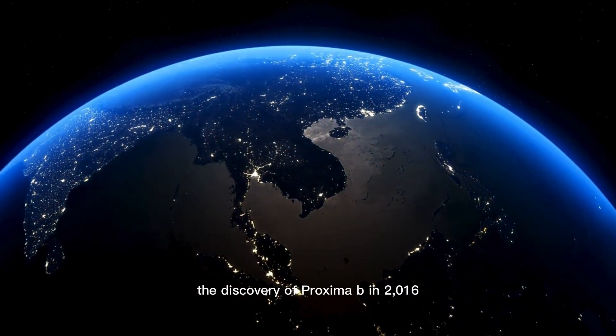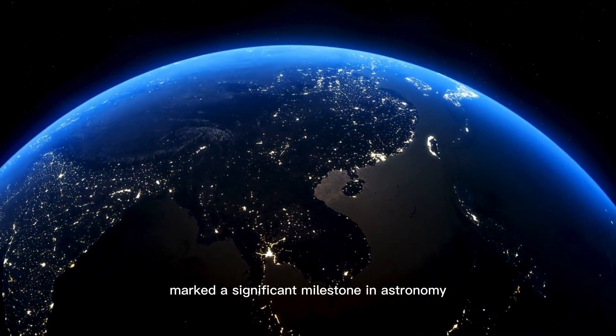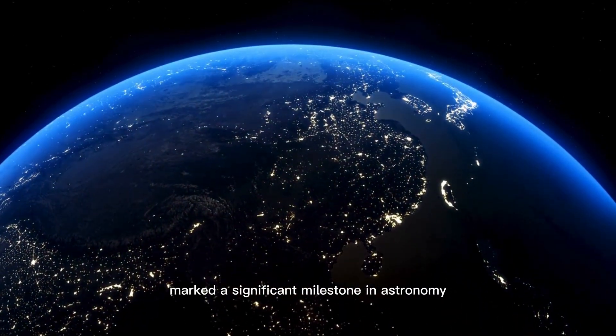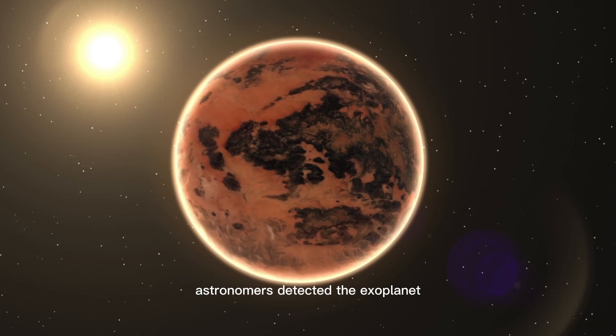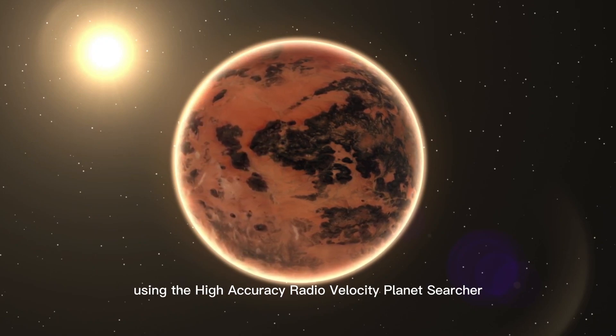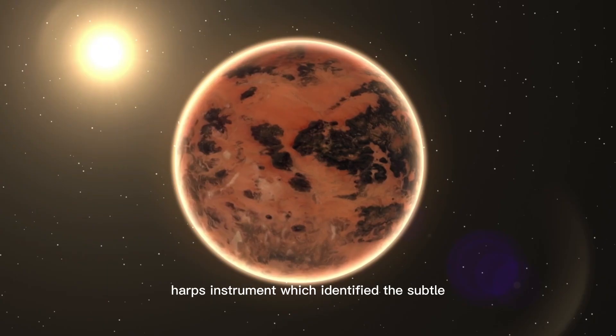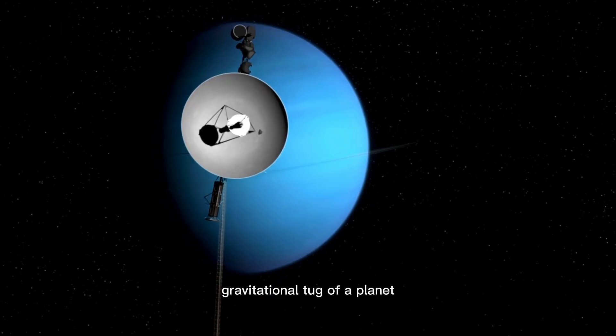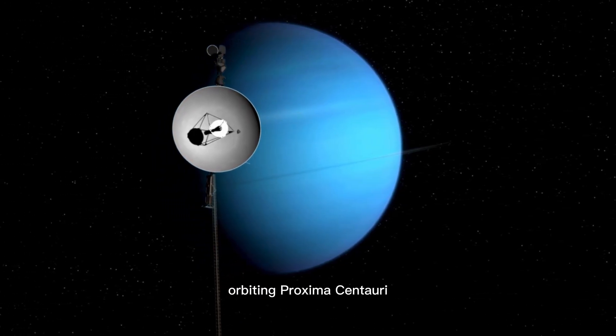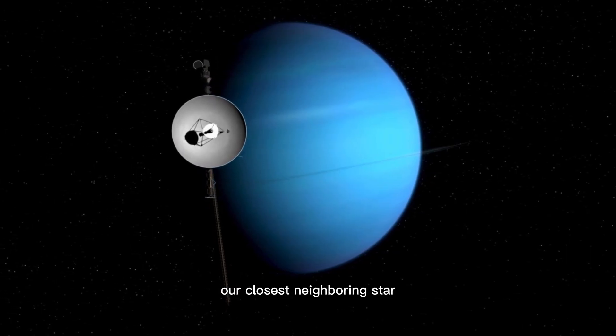The discovery of Proxima b in 2016 marked a significant milestone in astronomy. Astronomers detected the exoplanet using the high-accuracy radial velocity planet searcher, HARPS, instrument, which identified the subtle gravitational tug of a planet orbiting Proxima Centauri, our closest neighboring star.